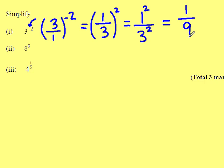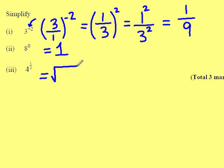Anything to the power of 0 is 1, so 8 to the power of 0 just equals 1. 4 to the power of a half can be rewritten as the square root of 4, and the square root of 4 is just the number 2.